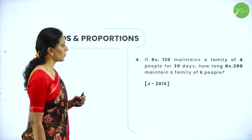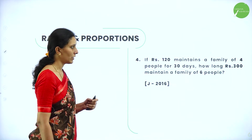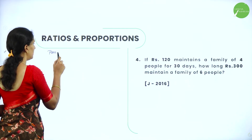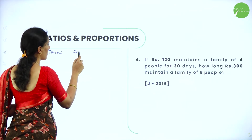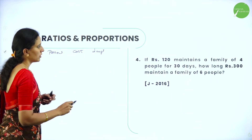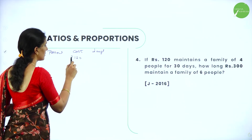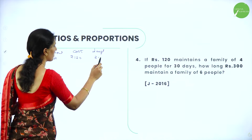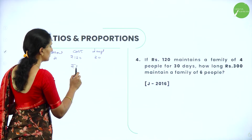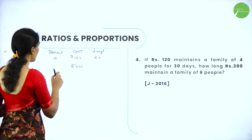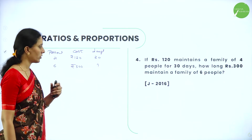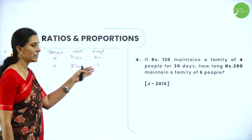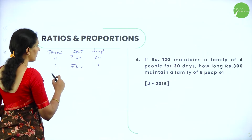Next question: If rupees 120 maintains a family of 4 people for 30 days, how long will rupees 300 maintain a family of 6 people? We consider persons, cost, and days. Rupees 120 can maintain a family of 4 persons for 30 days; then rupees 300 can maintain a family of 6 people for how many days? Clearly, cost and days are directly proportional while persons and days are inversely proportional.